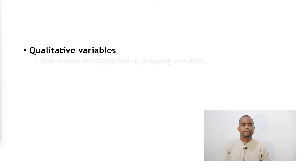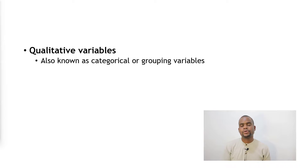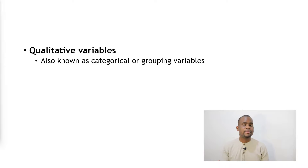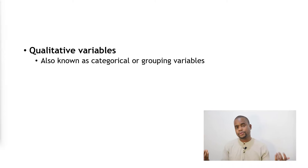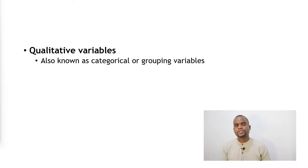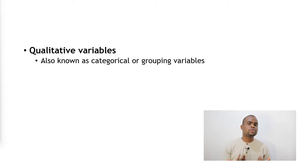Qualitative variables are also known as categorical or grouping variables. The reason they're called categorical is because they mostly put people into categories. For example, marital status has categories: single, married, or divorced. Or sex puts people into male and female groups. Because we put people into categories in qualitative variables, they are also known as categorical or grouping variables.